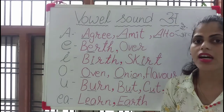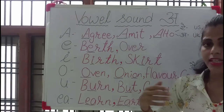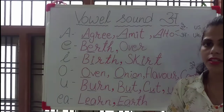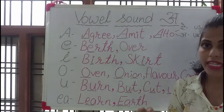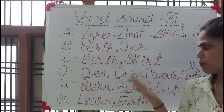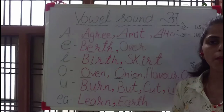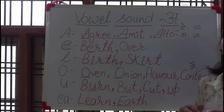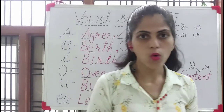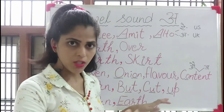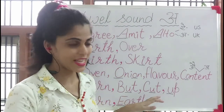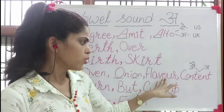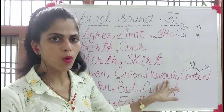This is Oven — Oven. O also makes the A sound. Then Onion — this is not 'onion,' it is 'onion.' Both O's in onion create a sound. Then we can see Flavor — Flavor.